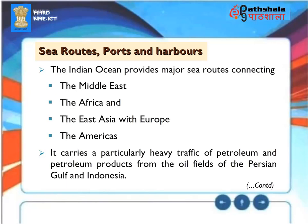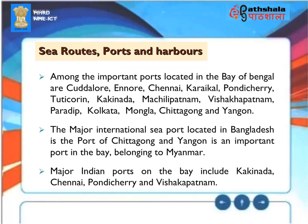Sea routes, ports and harbours. The Indian Ocean provides major sea routes connecting the Middle East, Africa and East Asia with Europe and the Americas. It carries a particularly heavy traffic of petroleum and petroleum products from the oil fields of the Persian Gulf and Indonesia. Among the important ports located in the Bay of Bengal are Kadalur, Ennor, Chennai, Karaikal, Pondicherry, Tutikorin, Kakinada, Machili Patnam, Vishakhapatnam, Paradeep, Kolkata, Mongla, Chittagong and Yangon. The major international sea port located in Bangladesh is the port of Chittagong and Yangon is an important port in the bay belonging to Myanmar. Major Indian ports on the bay include Kakinada, Chennai, Pondicherry and Vishakhapatnam.